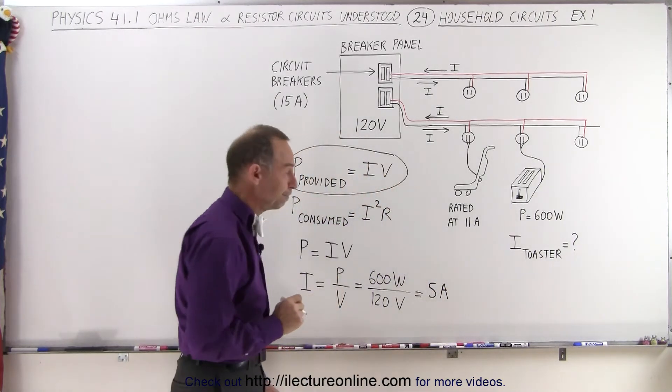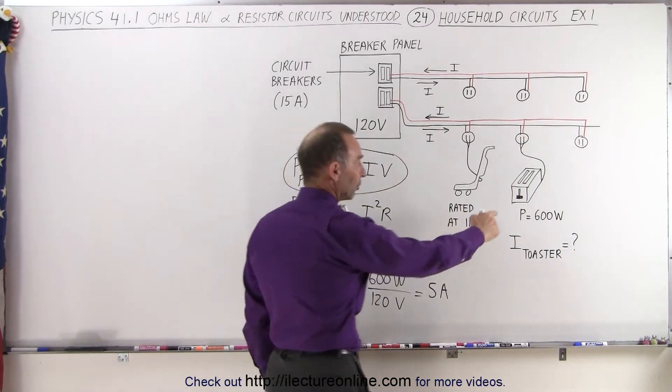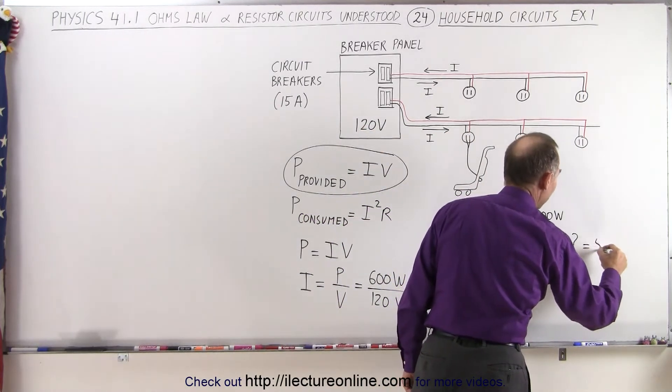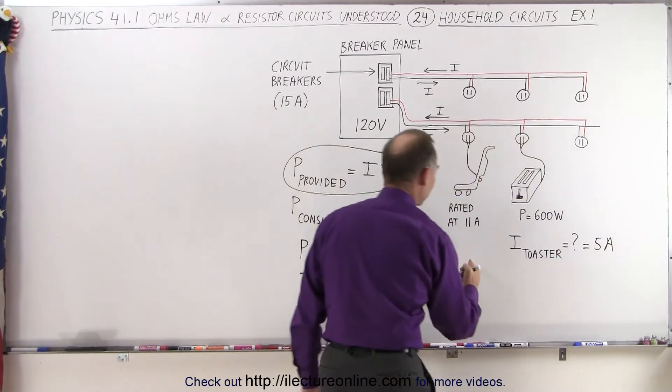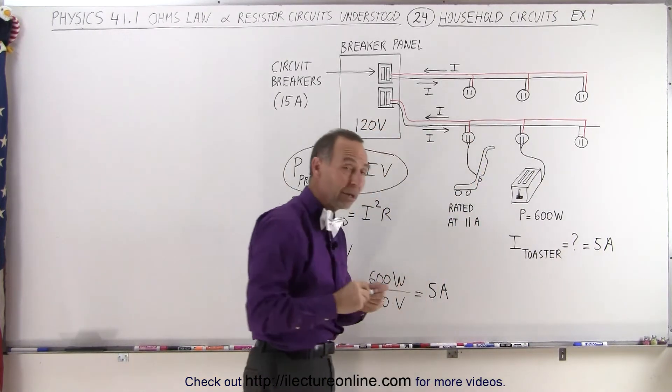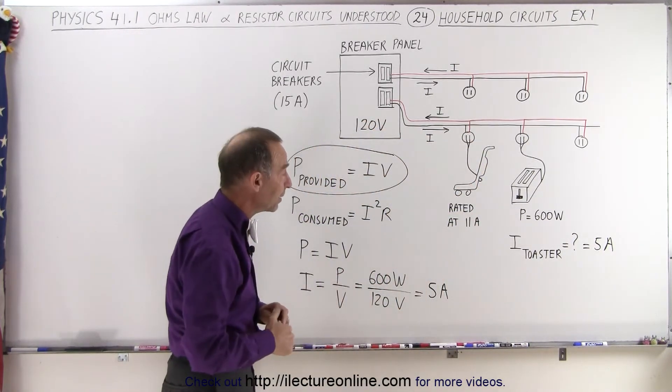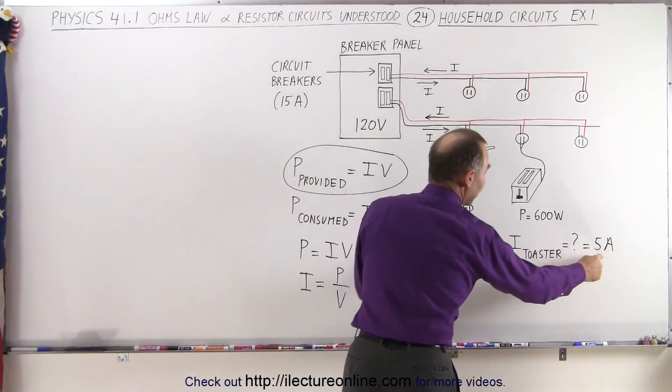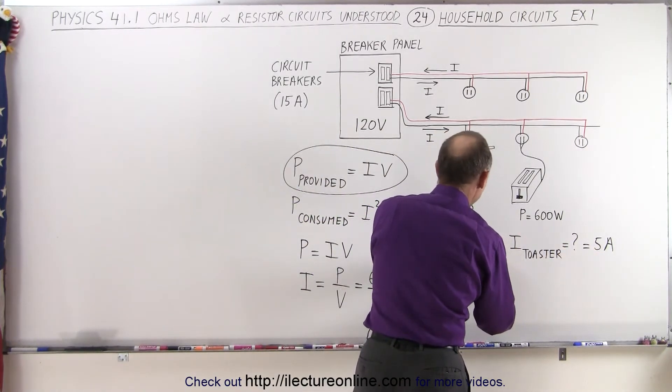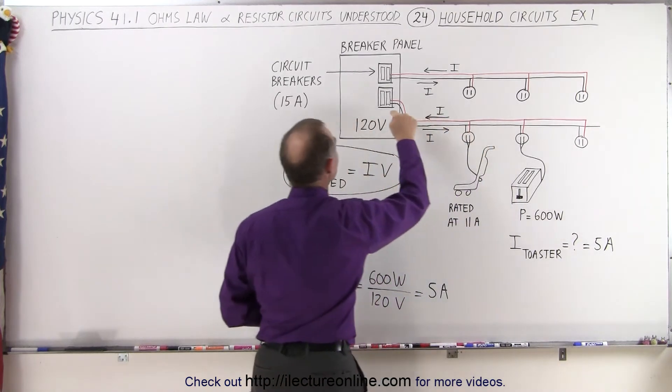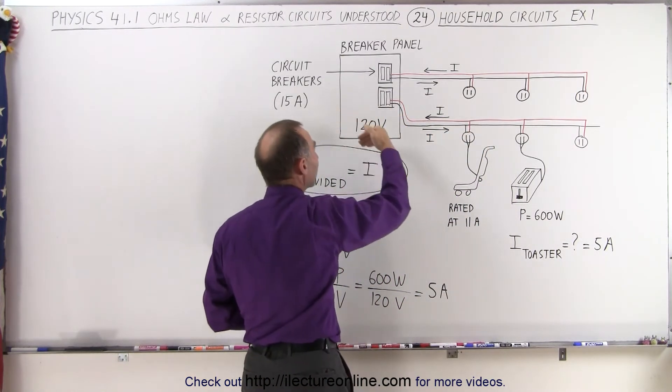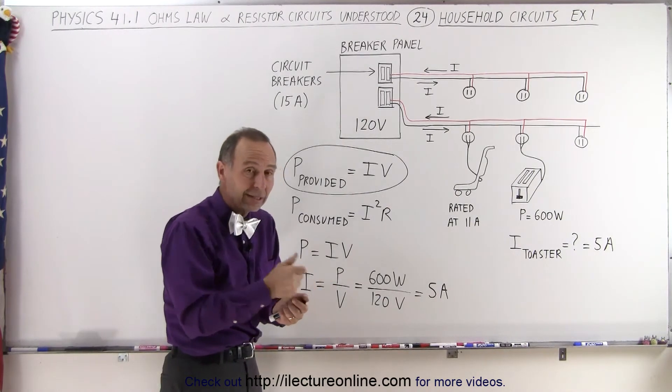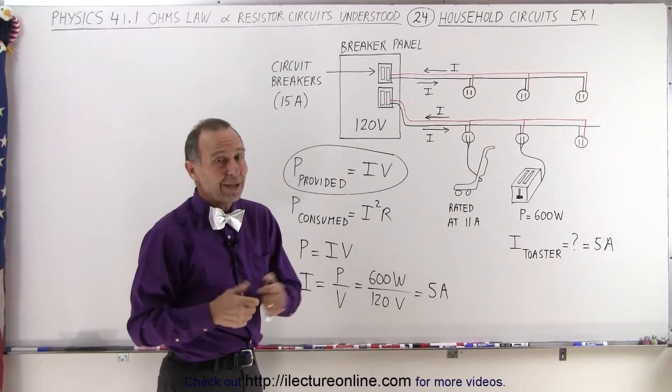Now here is a problem. If we're going to plug in the toaster and operate it, it's going to draw a current of 5 amps. At the same time we also have the vacuum cleaner plugged in and we vacuum at the same time, and that will be rated at 11 amps. 11 amps plus 5 amps together is 16 amps, which is greater than the amount allowed by the circuit breaker. The circuit breaker will trip as soon as you try to operate the vacuum cleaner and toaster at the same time. It's simply a safety mechanism.